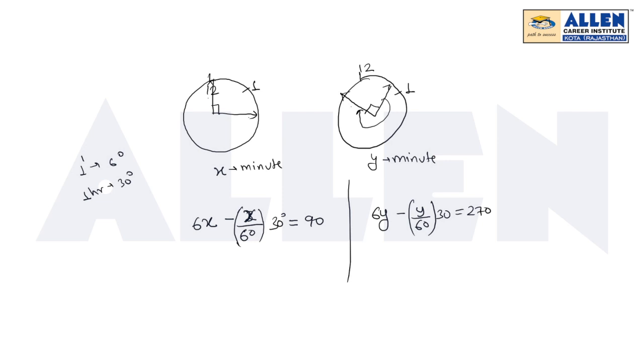From the first equation, x value is 180 upon 11. And from the second equation, y value is 540 upon 11.